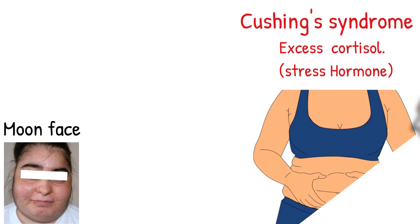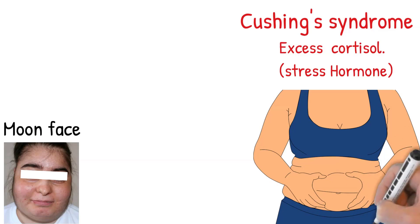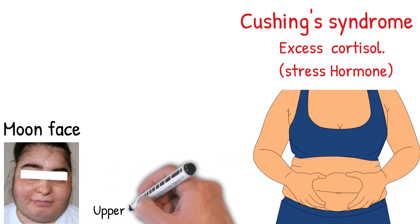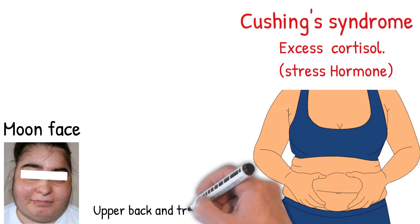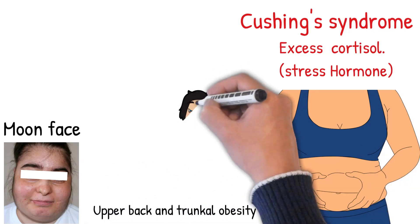Fat deposition occurs in the face, resulting in a round face or moon face, in the upper back known as buffalo hump, and in the trunk, causing a big abdomen and truncal obesity.